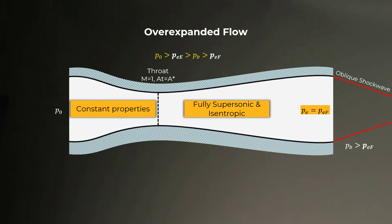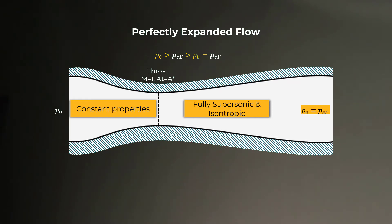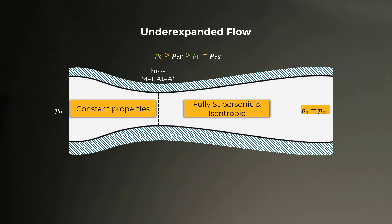On further reduction of exit pressure such that PB equals PEF, we arrive at the design condition of the nozzle. At this condition, there is a perfect supersonic expansion and no shock waves are present either inside or outside the nozzle. The back pressure and exit pressure match identically. Now, if the back pressure is further reduced below PEF, the nozzle is said to be underexpanded, and in order for the exit pressure PEF to be made equal to the back pressure, expansion waves are generated at the nozzle lip.